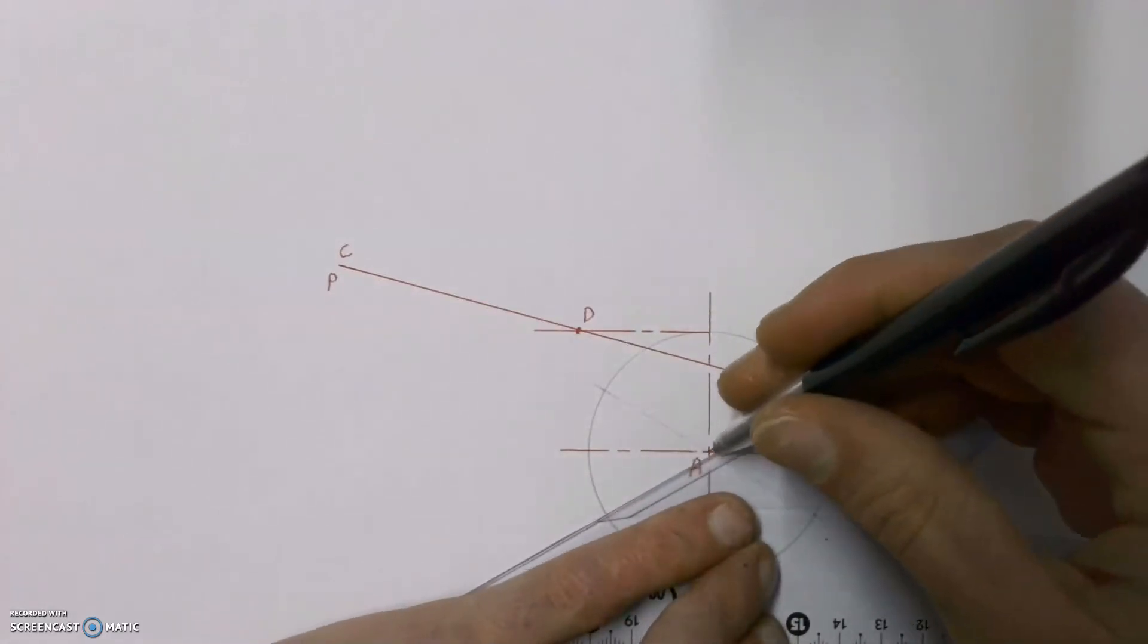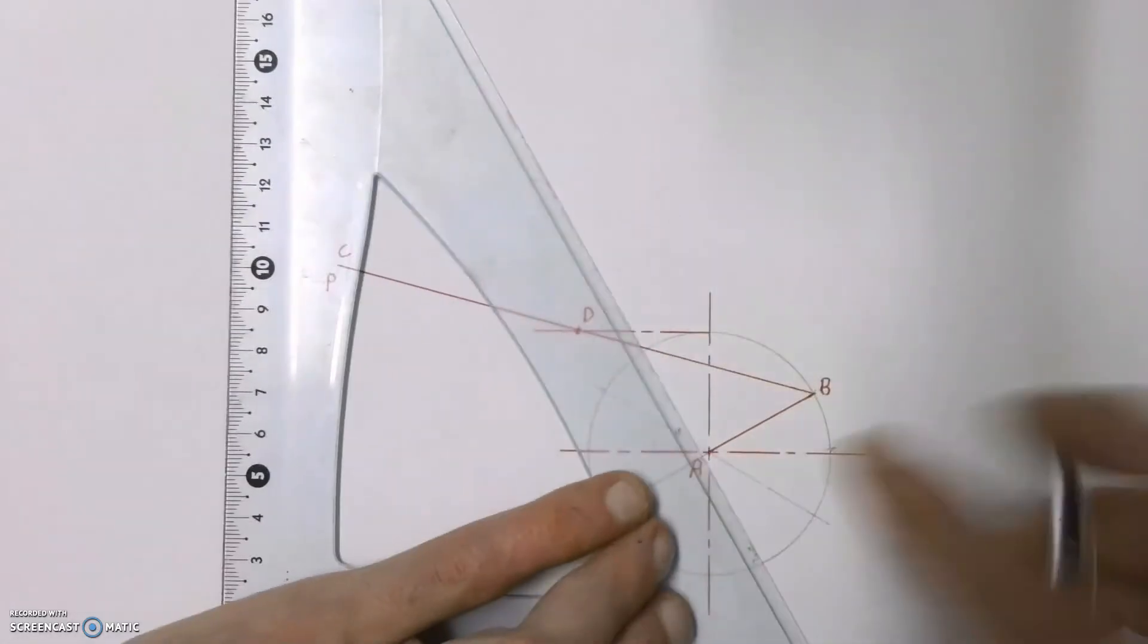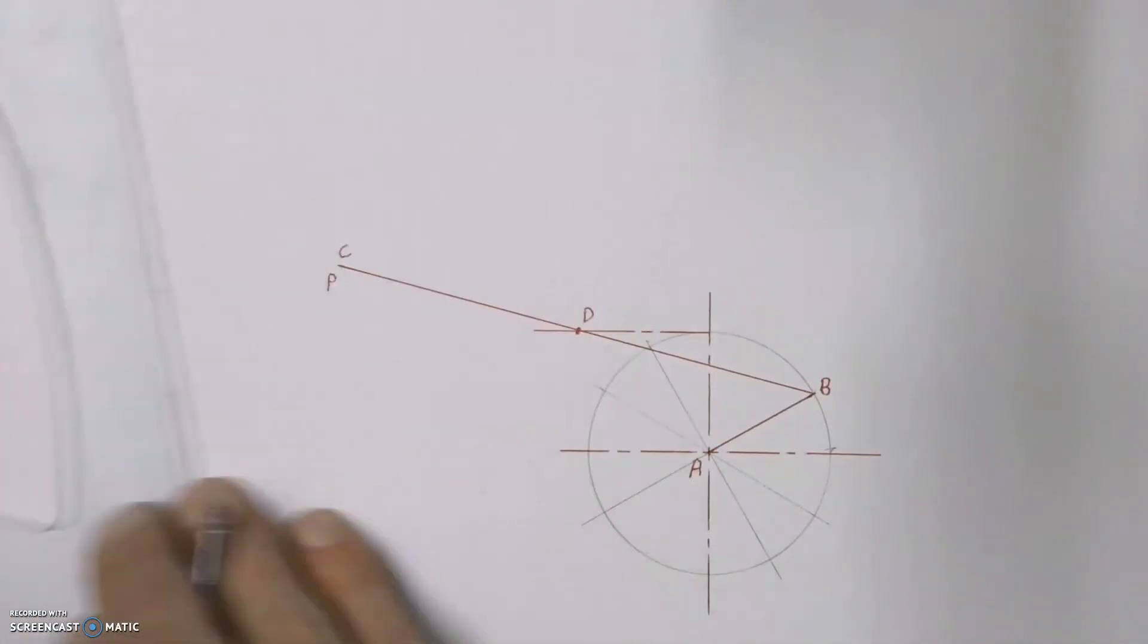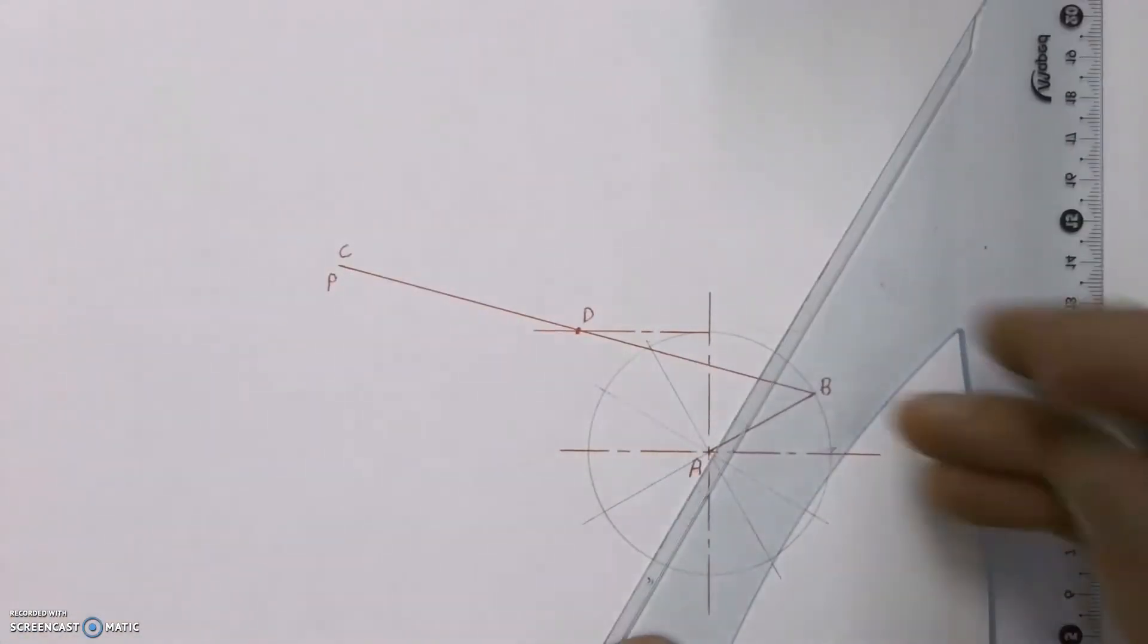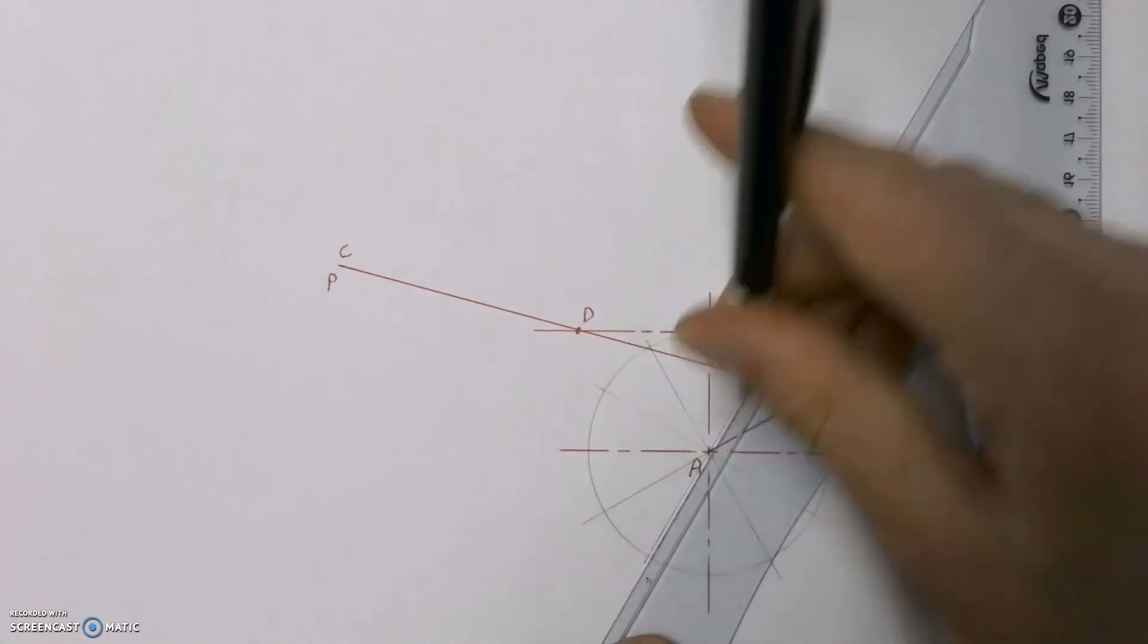You can of course break this up into more parts if you wanted to, which would give you a more accurate locus, but our minimum that we need is 12 parts.